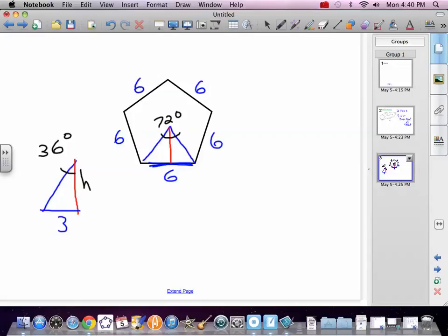Sine, cosine, tangent. SOH CAH TOA. We're standing here, 3 is opposite, and the h is adjacent. So tangent 36 equals opposite, 3 over h. Cross multiply, flip, solve. h tangent 36 equals 3. Divide both sides by tan 36. h equals 3 divided by tan 36.